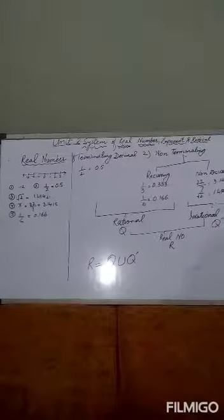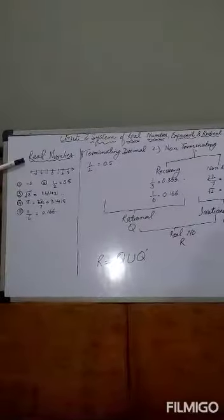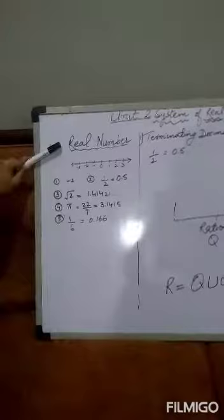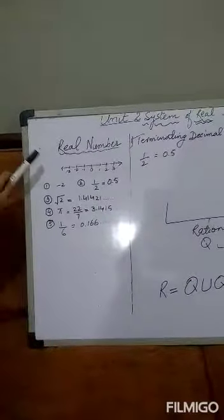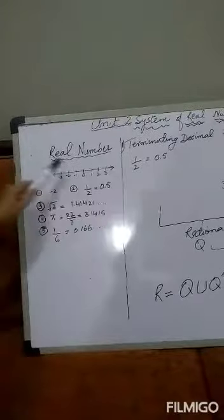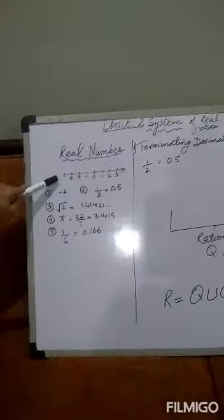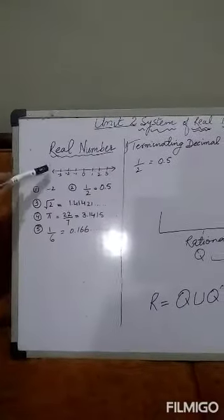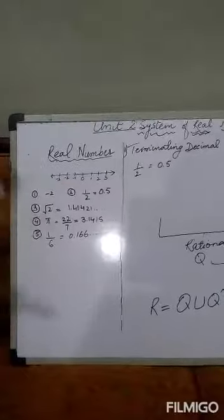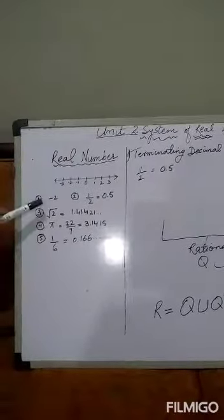What are real numbers? The simple definition of a real number is that any number which can be plotted on a number line is called a real number. This is the number line. Any number which can be plotted on a number line is called a real number. For example: